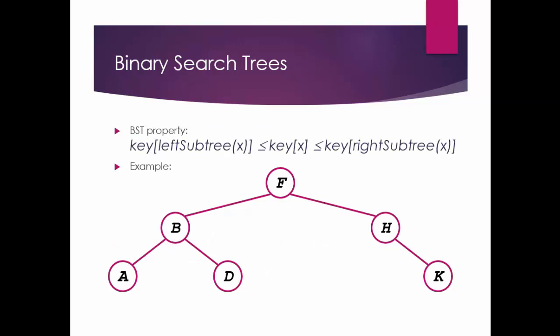In in-order traversal, we first go to the leftmost side. For f, the left side is b. B has a left child, so we go to a. First, a will be traversed. Does a have a left child? No. So a is traversed first. Then back to root node b — we write b. After that we traverse the right child, d. Then we go back to root node f and traverse f. Then we go to the right side, to h. We check whether h has a left child — it does not. So we traverse h. After that, we traverse the right child of h, which is k. The traversal is complete. This is in-order traversal.